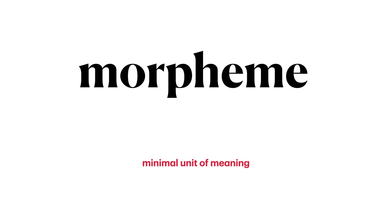The next element of language that we will consider is the morpheme. A morpheme is a minimal unit of meaning in a language. Some examples of morphemes in English might be: 'the,' 'dog,' '-er,' '-s,' 'hit,' and so on. Some of those were standalone words comprising only a single morpheme. Others are suffixes, like '-er' at the end of 'batter,' or the '-s' at the end of 'walks.'